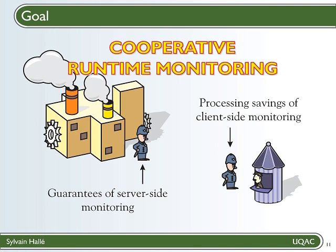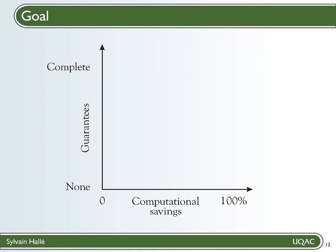To describe the idea, here's a graph where the horizontal axis gives the computational savings of using a method rather than the other, and the vertical axis shows the guarantees the server has. If we were to put a dot corresponding to client-side monitoring, in client-side monitoring the server has complete computational savings since it doesn't perform any verification and completely trusts the client, but it doesn't have any guarantee that the messages follow the contract for that same reason. So client-side monitoring goes at the lower right of the graph.